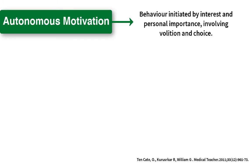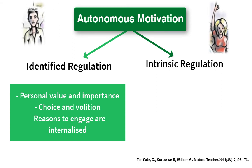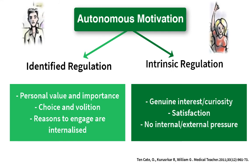Autonomous motivation, on the green side, represents engaging out of interest and personal importance — it involves volition and choice. Identified regulation is where an activity may not be of genuine interest but does represent personal value and is consciously valued; students identify with it and freely choose to engage. A student may say: 'Succeeding in this course will help me become a good professional in the field I have chosen.' The greener type is intrinsic regulation, where there is genuine interest and the activity generates satisfaction with no external or internal pressure. A student may say: 'The contents and activities in this course are interesting, and learning them gives me great satisfaction.'